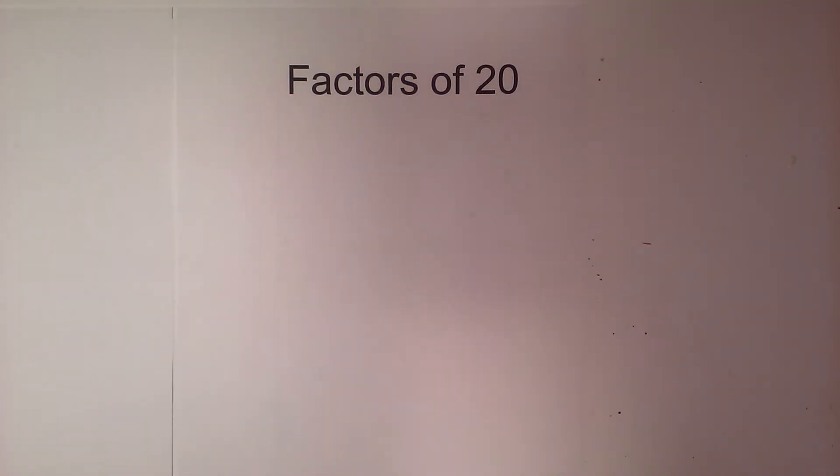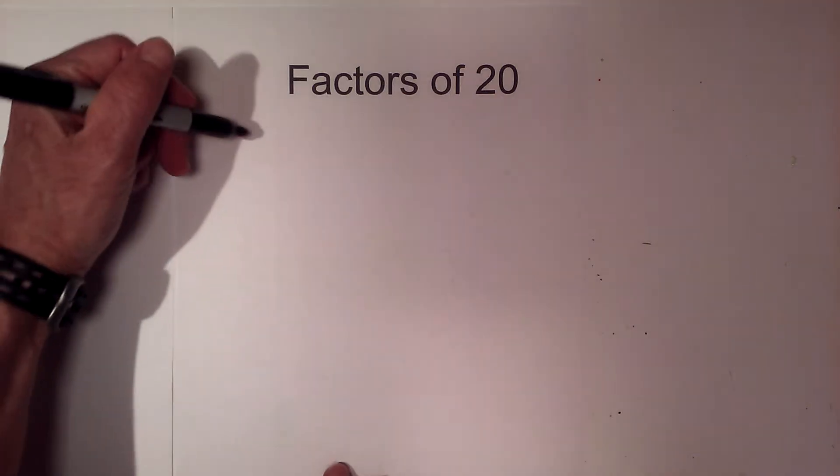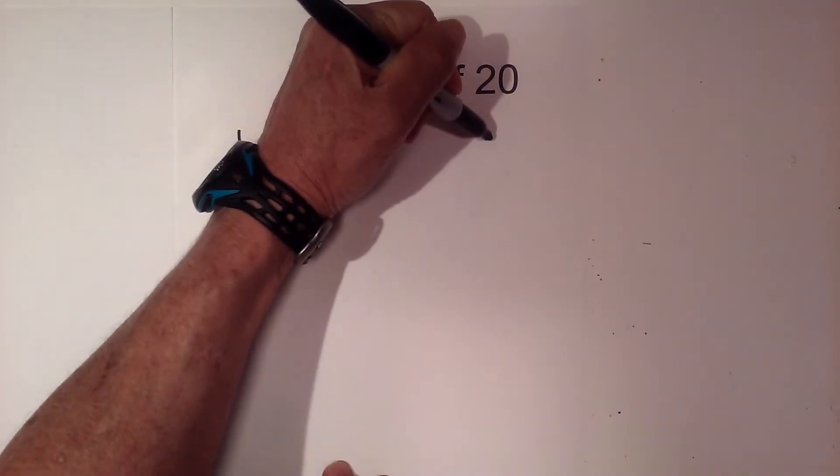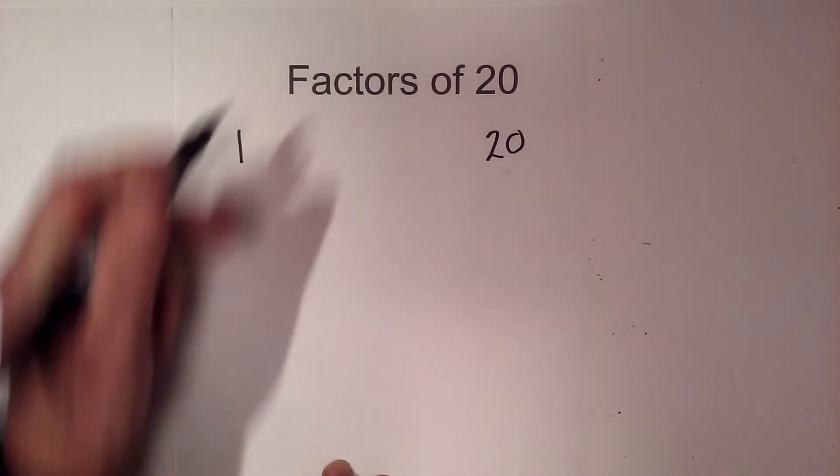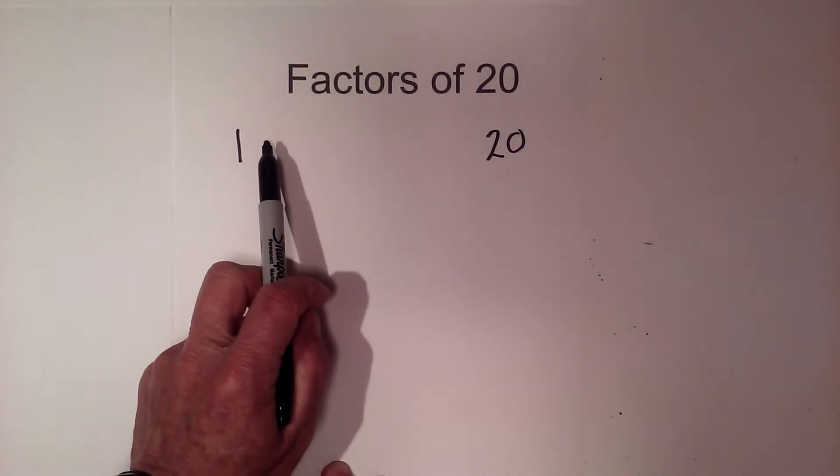In this video, let's find the factors of 20. I like to use this method: I write 1 times 20 as two of the factors, and then I try to find all the factors in between these two numbers that when you multiply them together equal 20.